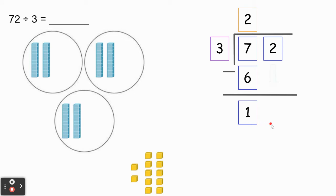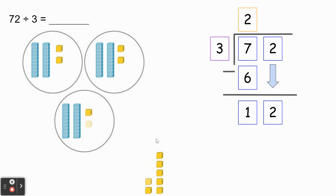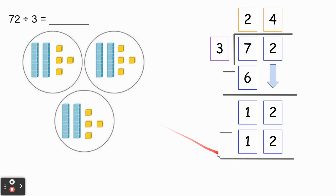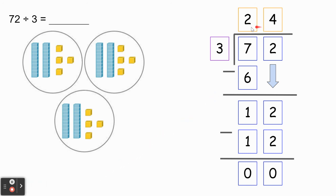We can represent that by bringing down the 2, giving us 12. So we're sharing 12 unit cubes — we give each group one unit cube at a time until we're out. We've evenly shared all the unit cubes. Each group has four unit cubes, so we place 4 in our quotient in the ones place. We used a total of 12 unit cubes, so we're subtracting 12. Another way to get 12 is 4 times 3. Two minus 2 is 0 and 1 minus 1 is 0, so the remainder is 0 — no base 10 blocks left over. Our quotient or answer is 24, and we can see that in each group: two tens and four ones.